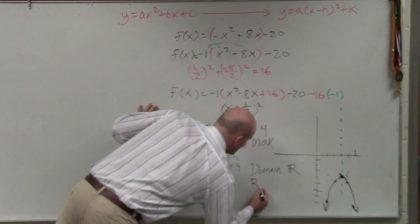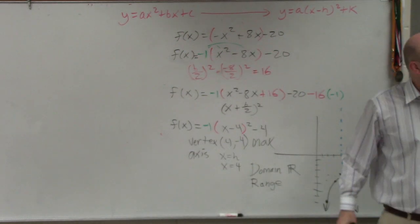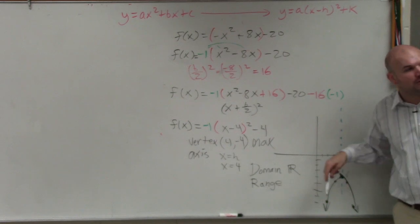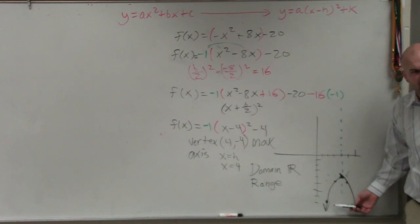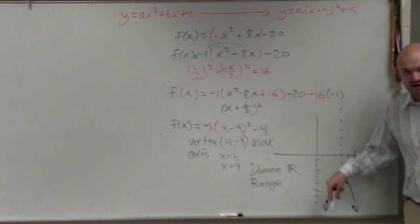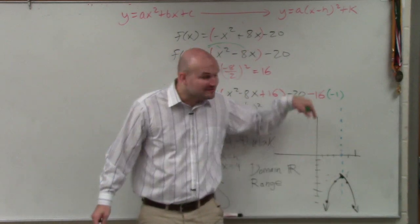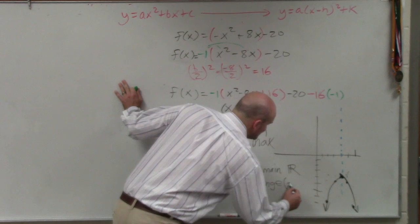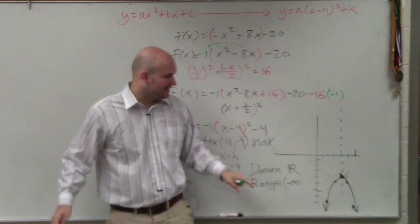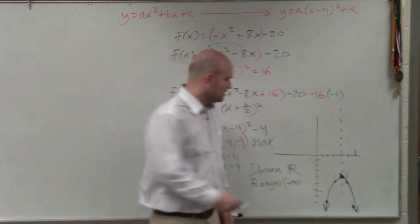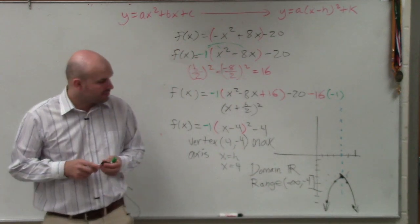The range is the set of all y values, meaning all the y values that could be a y coordinate. So you can see that this graph, how low is the graph going to go? Well, could negative 100 be a y coordinate of a point on this graph? Yeah, because the graph is going to keep on going lower. Could negative 1,000? Yes. What about negative 1,000? The graph is going to continue going. So it goes as low as negative infinity. But then what is the highest y coordinate that this graph has? Negative 4.